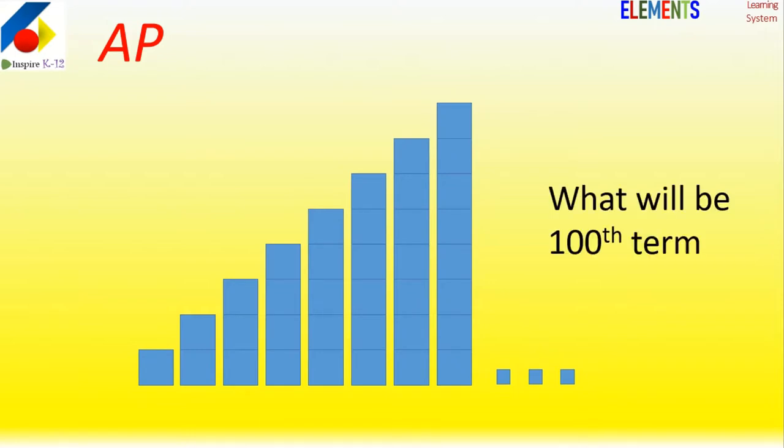If in this series, for example, each box represents 1, 2, 3 - simple counting numbers or natural numbers - what will the 100th term be?